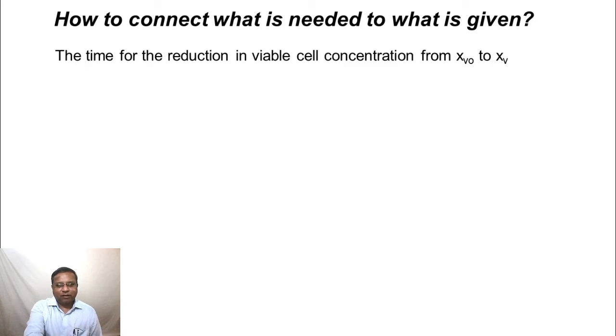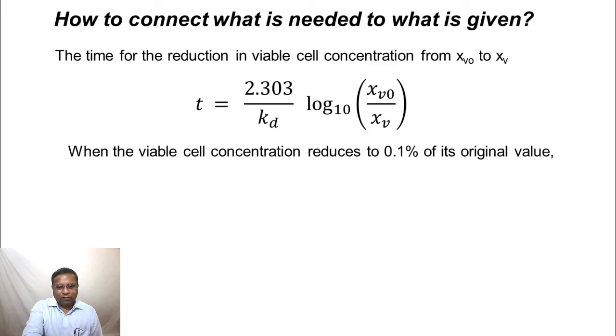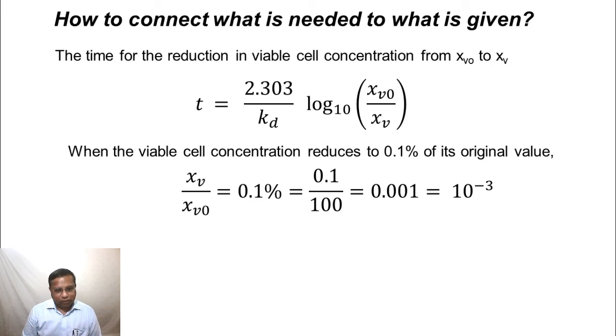The time for reduction in viable cell concentration from xv0 to xv, we have already derived and seen earlier also, equals 2.303 by kd log to the base 10 of xv0 by xv. When the viable cell concentration reduces to 0.1 percent of its original value, this is the condition that is of interest to us in problem B. We know that xv by xv0 is 0.1. If xv by xv0 is 0.1 percent, this is percent. If we convert it into fraction, this will turn out to be 0.1 by 100. Percentage is always out of 100. So fraction is, when we need the fraction, we need to divide it by 100. This is 0.001 or 10 power minus 3.